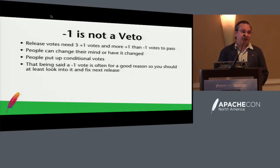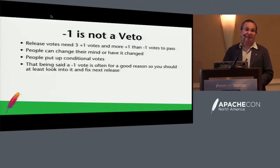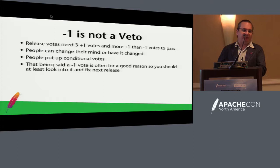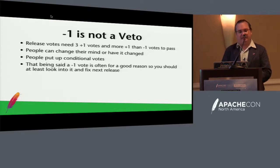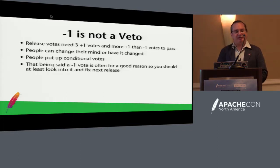A minus-one vote is not a veto. Just because you get a minus-one on a release doesn't mean you have to redo it. If someone votes minus one, you can try to change their mind — say you'll fix it in the next release, or explain why it's not a problem. Don't be discouraged if you put up a release and immediately get a minus one. People also put up conditional votes: 'minus one unless you fix this in the next release.' If you say you'll fix it and provide a JIRA, they'll likely change their vote. There's generally a good reason behind a minus one, so look into it and try to fix it.